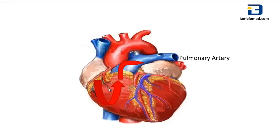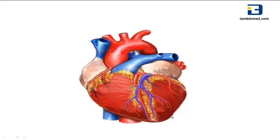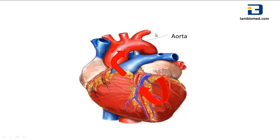In the lungs, the blood again becomes reoxygenated. The left side of the heart receives the oxygen-rich blood from the lungs. It then pumps the blood through the aorta, through the rest of the body, through a complex network of arteries, arterioles, and capillaries.